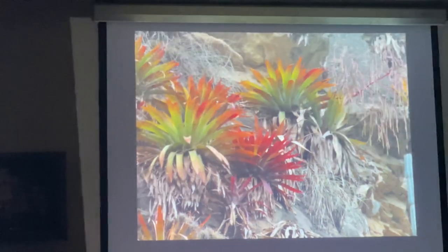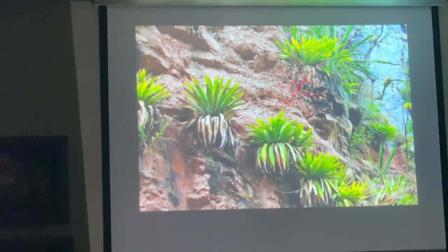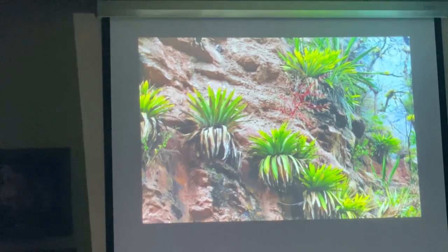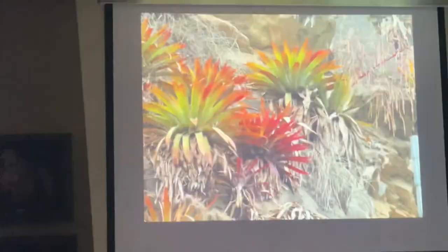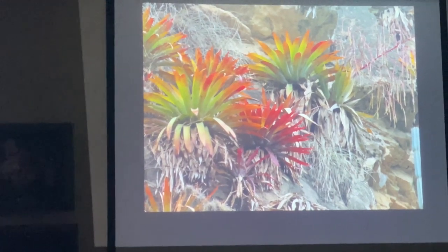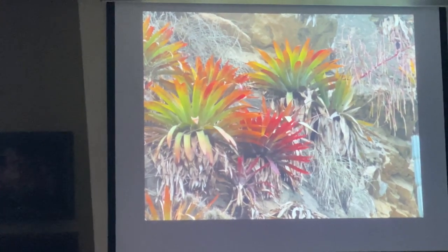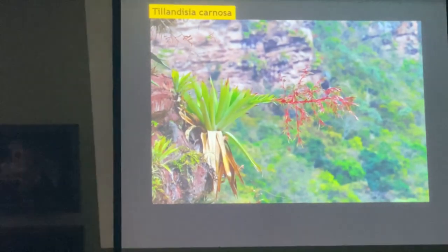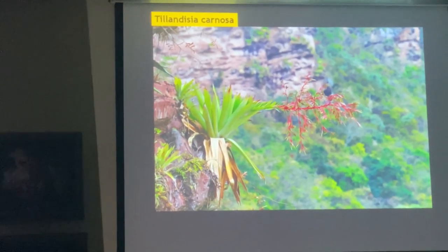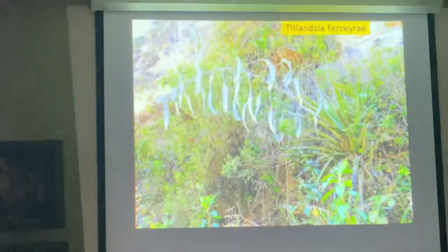I usually go in August or September, for a reason I'll explain afterwards. September is, of course, the spring in South America, south of the equator, and the plants are just coming into bloom. Tillandsia carnosa is thoroughly common and widespread along this valley.